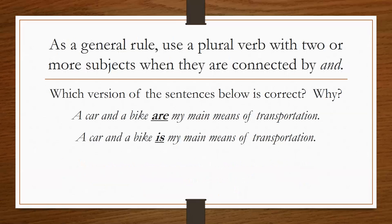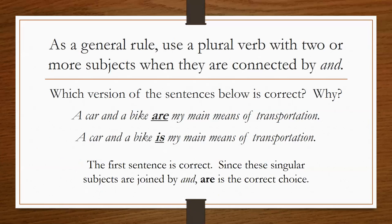As a general rule, we use a plural verb with two or more subjects connected by the word 'and.' Consider: 'A car and a bike are my main means of transportation' versus 'A car and a bike is my main means of transportation.' The first sentence is correct. Even though 'car' and 'bike' are individually singular, joining them with 'and' creates a combined plural subject, so we use the plural verb 'are.'